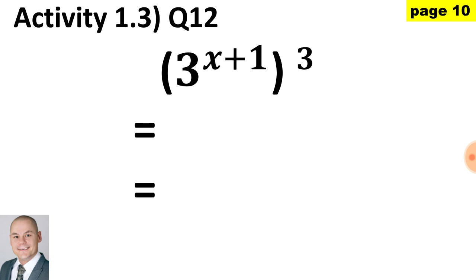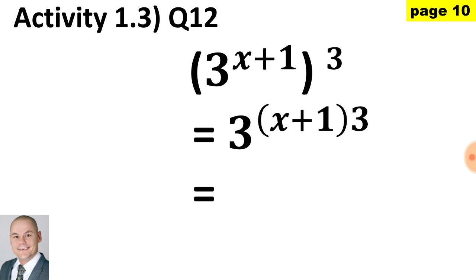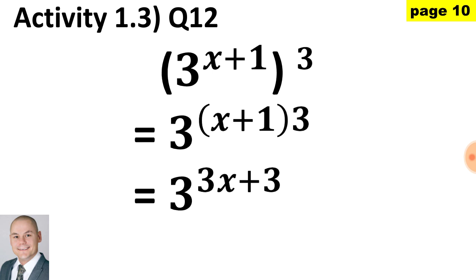This is our final question. We have a power of 3 to the x plus 1, all raised to the exponent of 3. Where a power is raised to an exponent, we would multiply the exponents. Therefore, the base is 3 raised to the x multiplied by 3 plus 1 multiplied by 3. Our final answer is 3 to the exponent of 3x plus 3.